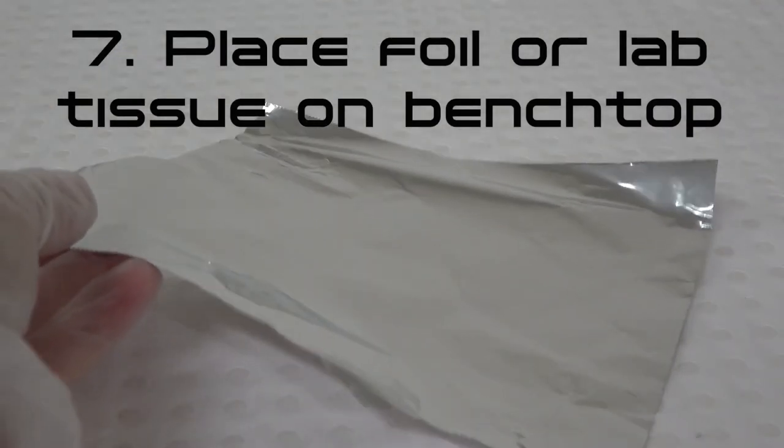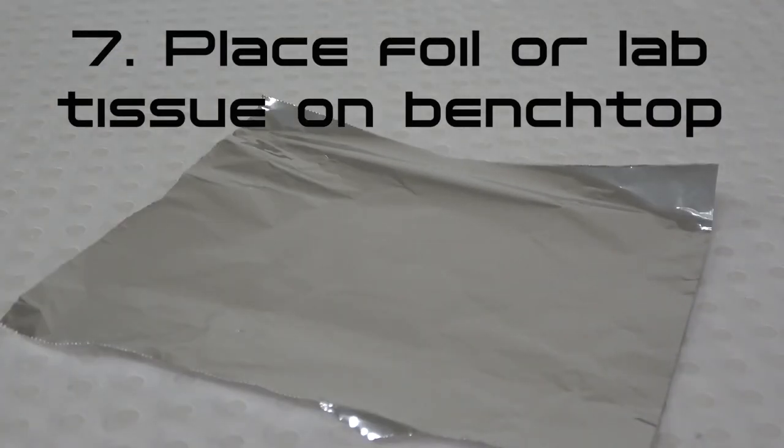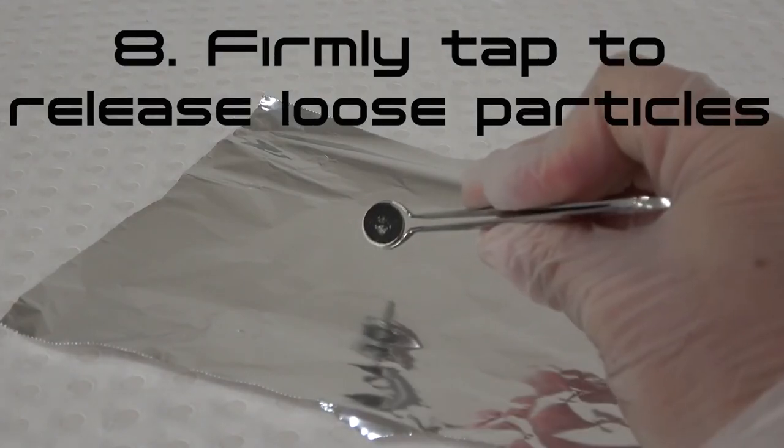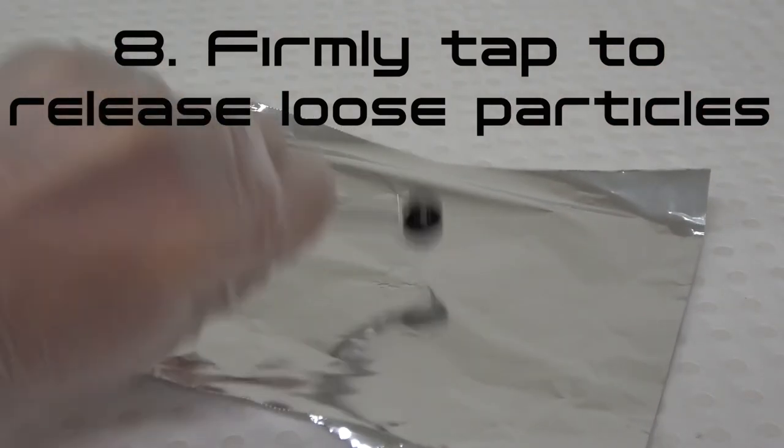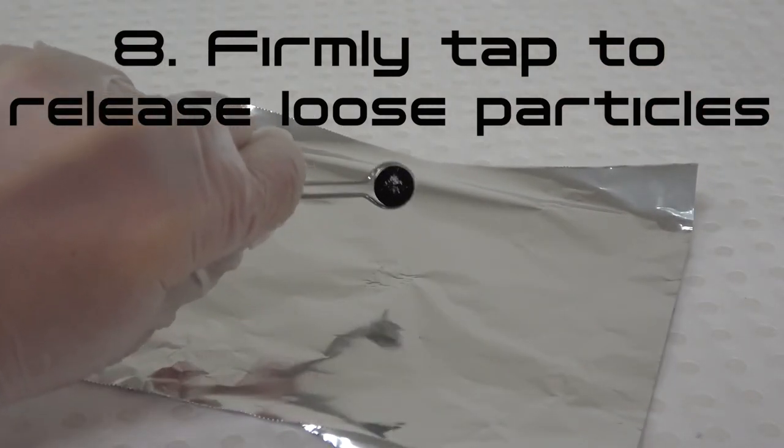Step 7: Spread a clean piece of foil or low-lint lab tissue on the bench top. Step 8: Firmly tap the side of the SEM stub onto the foil so that any loose particles fall off the stub.